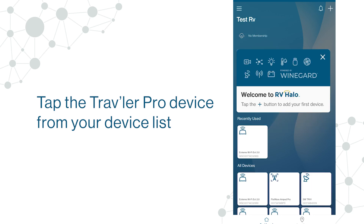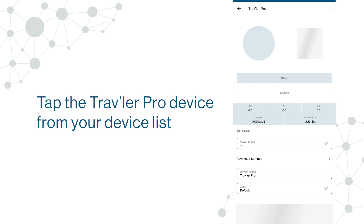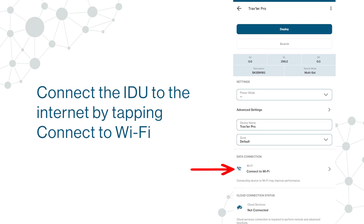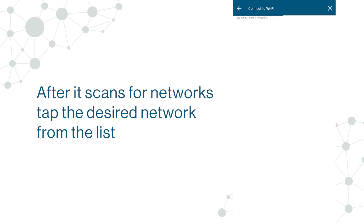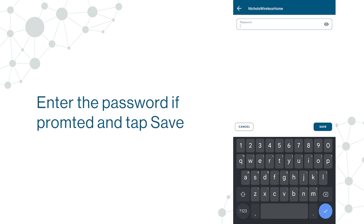Tap the Traveler Pro device from your device list. Connect the IDU to the internet by tapping Connect to Wi-Fi. After it scans for networks, tap the desired network from the list. Enter the password if prompted and tap Save.